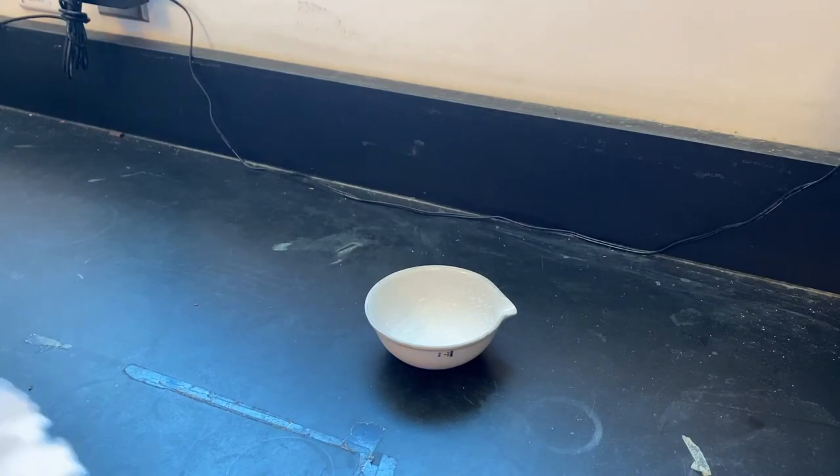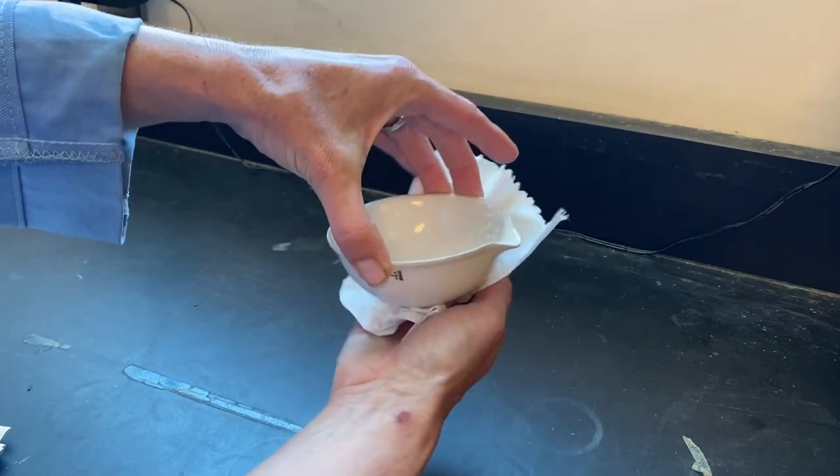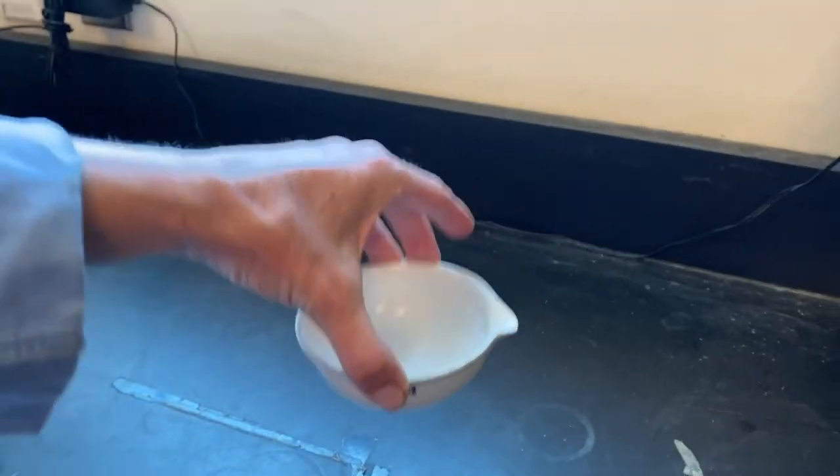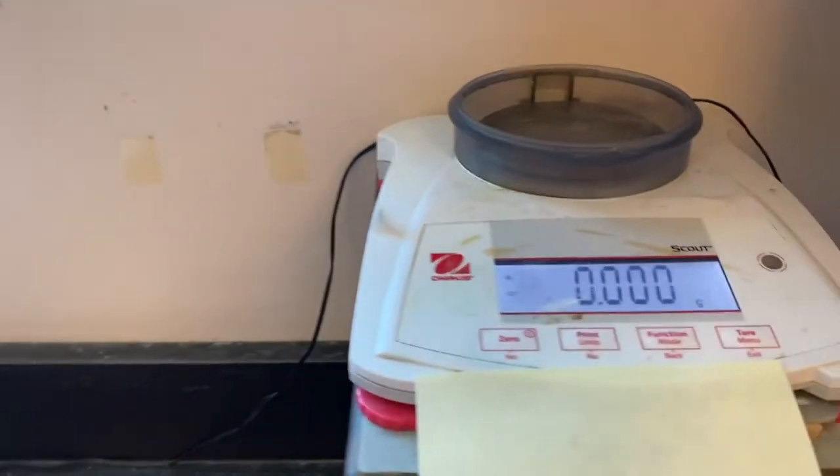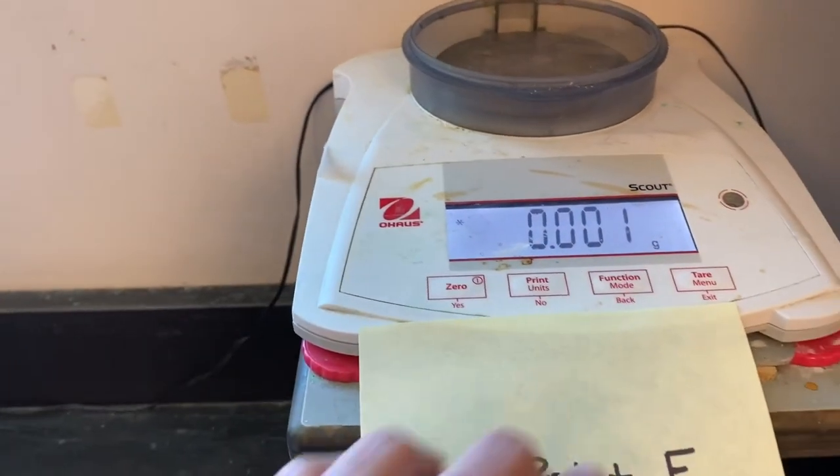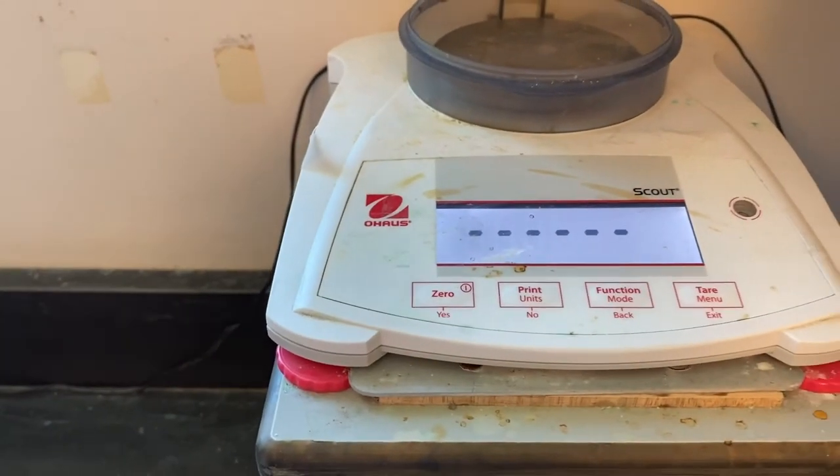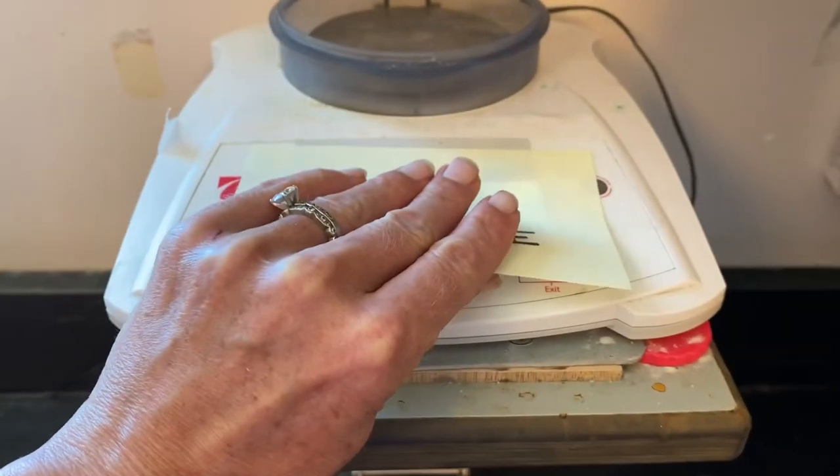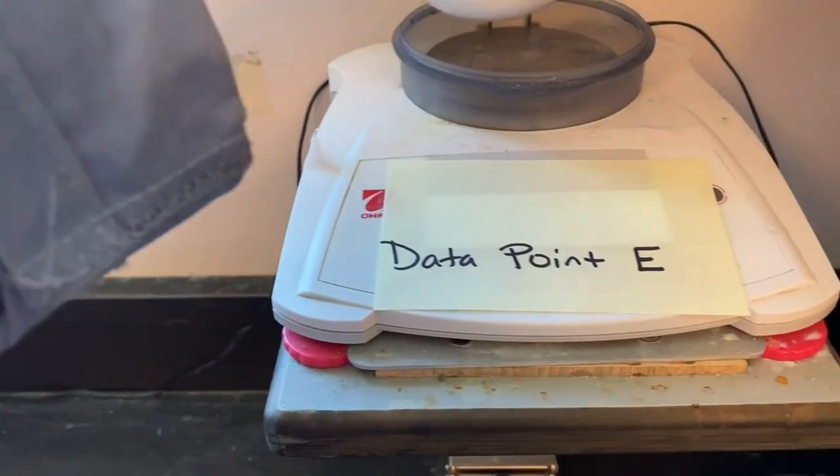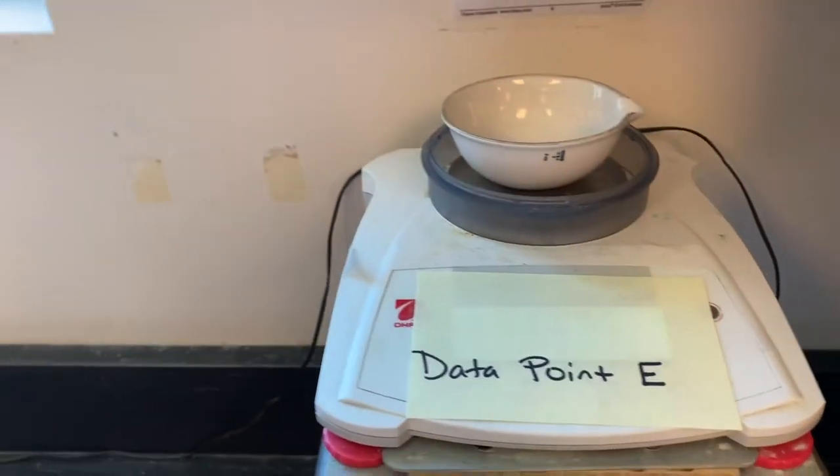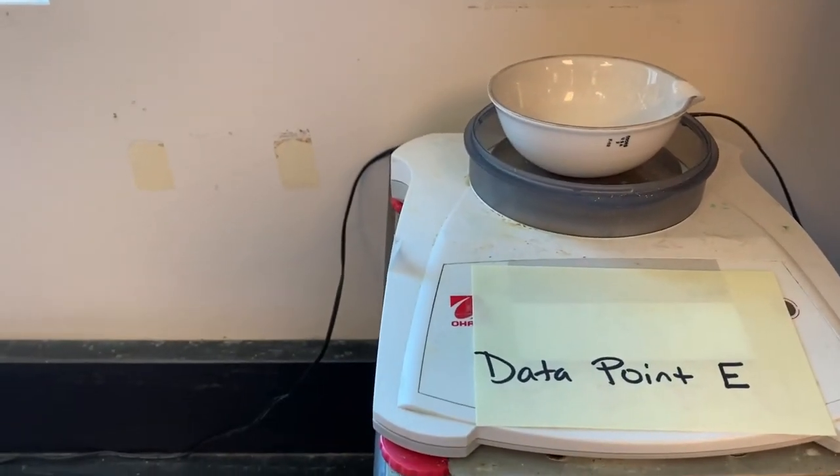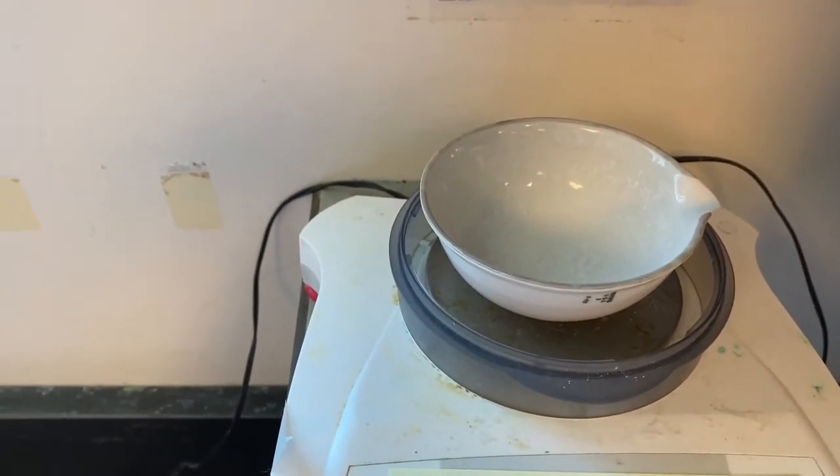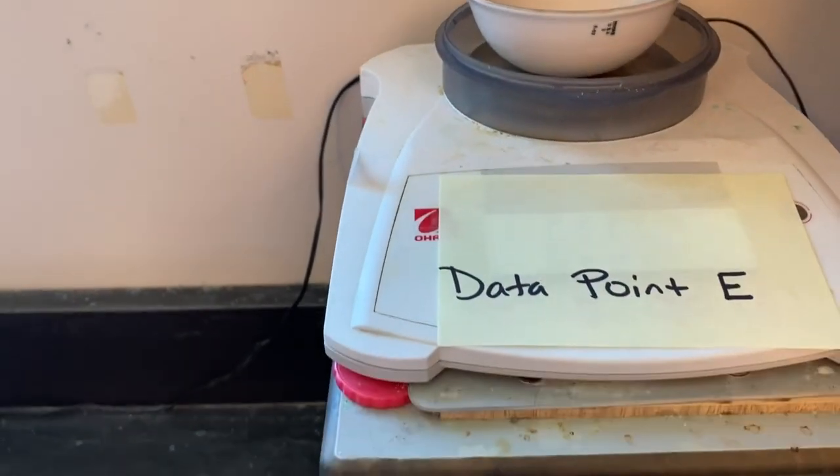My evaporating dish is now cool. I'm going to carefully dry off the bottom because if there's any water left over that would give us an inaccurate mass reading. I'm going to go back to my scale. It does indeed read zero. Zero it one more time just to make sure. And now this will be data point E. So data point E is the mass of my evaporating dish with the solid dried product. Make sure you record your student data number.